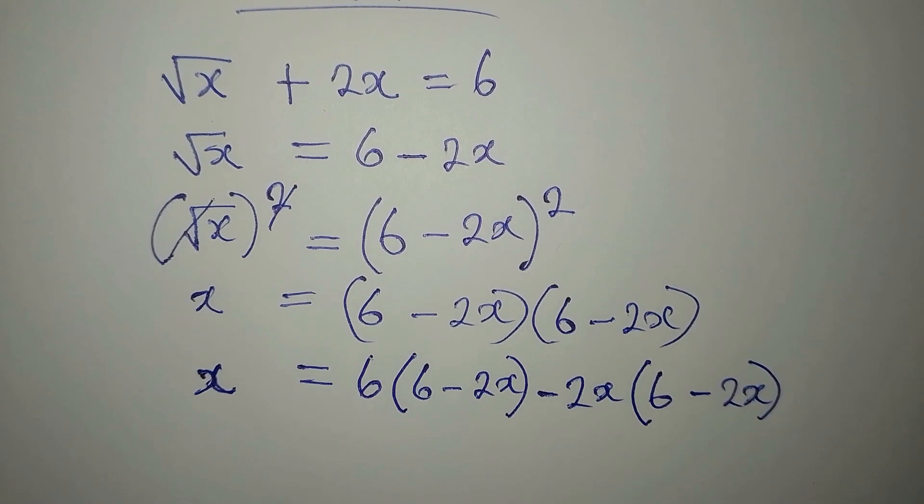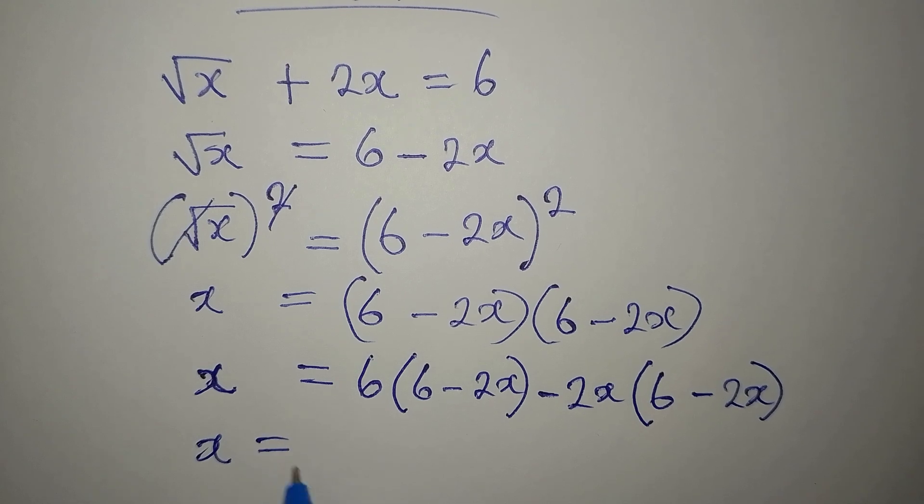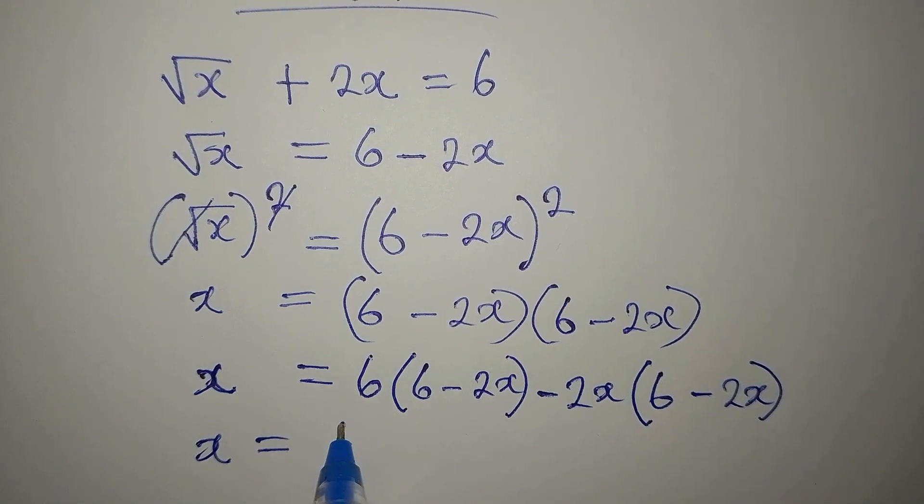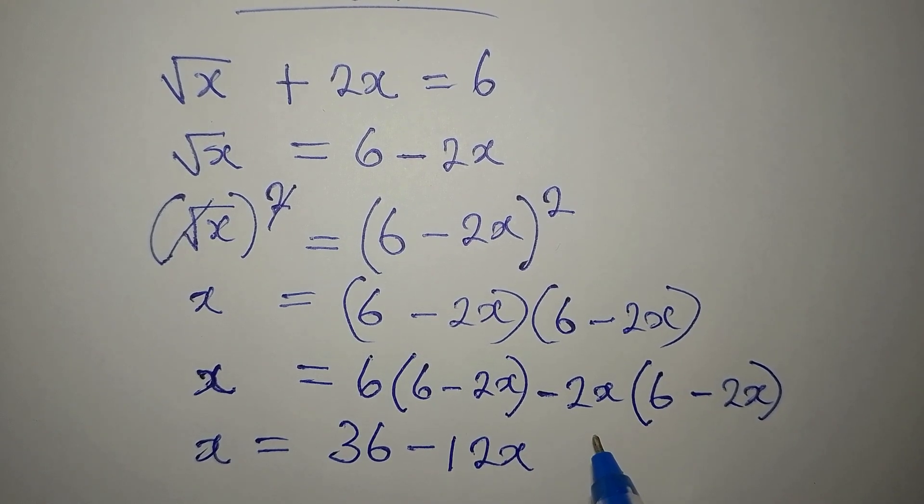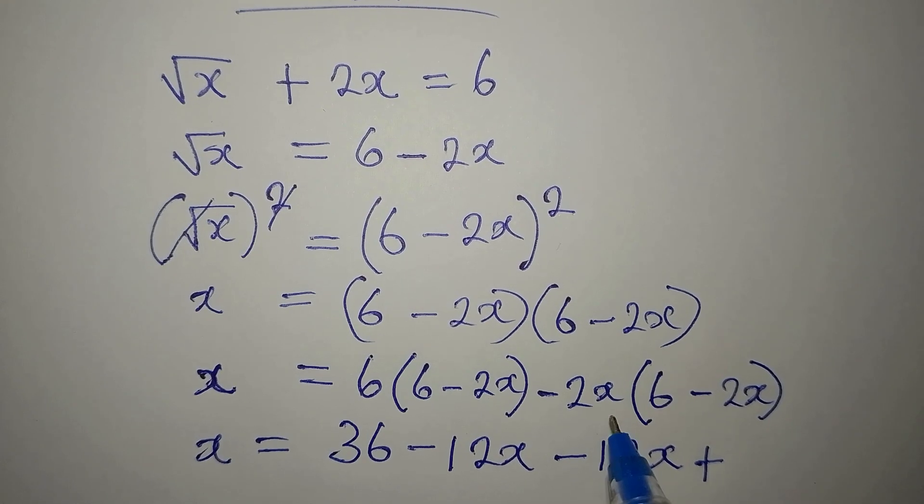So let's multiply. x will be equal to 6 times 6. That is 36. 6 times minus 2x. That will be minus 12x. Minus 2x times 6. Another minus 12x. Then minus times minus is positive. 2x times 2x will be 4x squared.